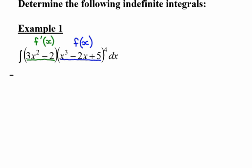Okay, so my base function is x cubed minus 2x plus 5. I add 1 to the exponent and I divide by that exponent. And don't forget to add your constant of integration.